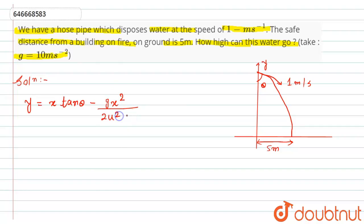x equals 5 meters and the initial velocity u - actually there's a printing mistake - this is 10 meters per second.